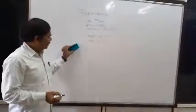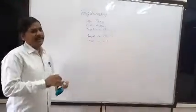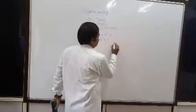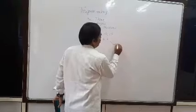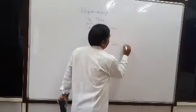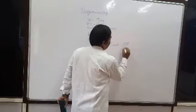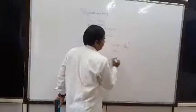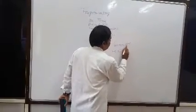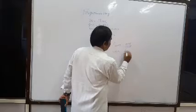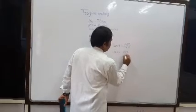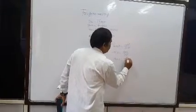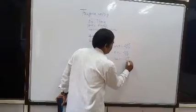To remember all trigonometric functions, use the mnemonic SOH-CAH-TOA. Sin theta = Opposite over Hypotenuse (S-O-H). Cos theta = Adjacent over Hypotenuse (C-A-H). Tan theta = Opposite over Adjacent (T-O-A).